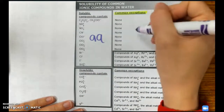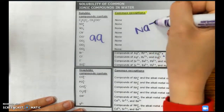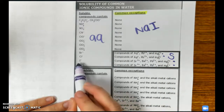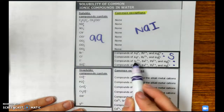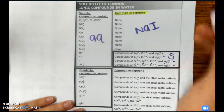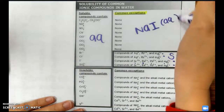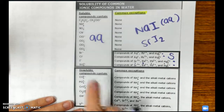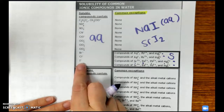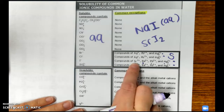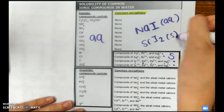For example, if you had NaI: iodine is usually aqueous, and sodium is not one of the exceptions, so it is aqueous. But if you had strontium iodide, iodine is probably aqueous — but strontium is listed as an exception, so that compound would form a precipitate and be a solid.